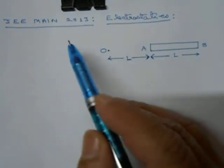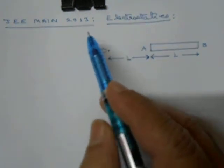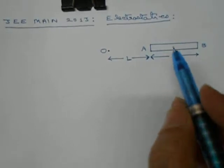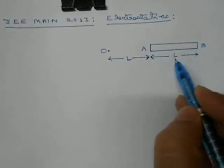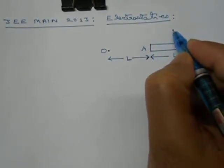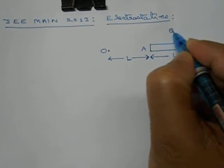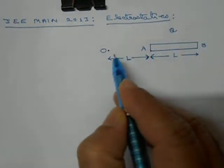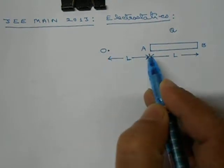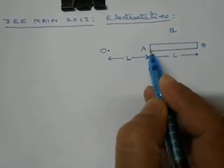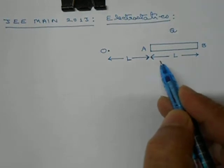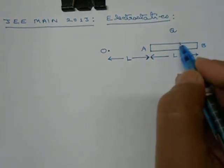This question is from JEE Main 2013, on electrostatics. We are given a rod AB of length L with a charge Q on it. We have to find the potential at the point O, which is at a distance of L from one end.